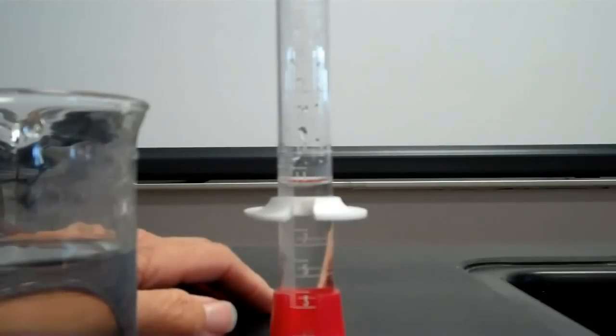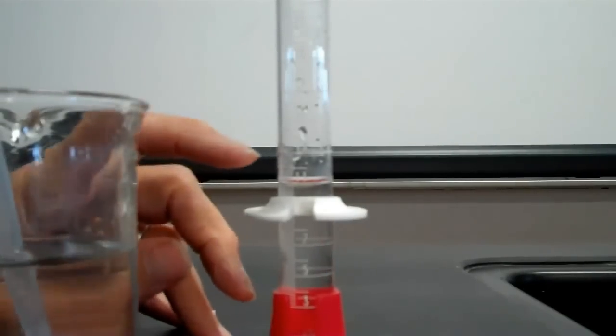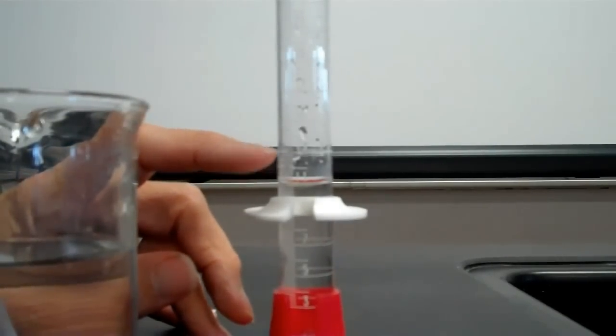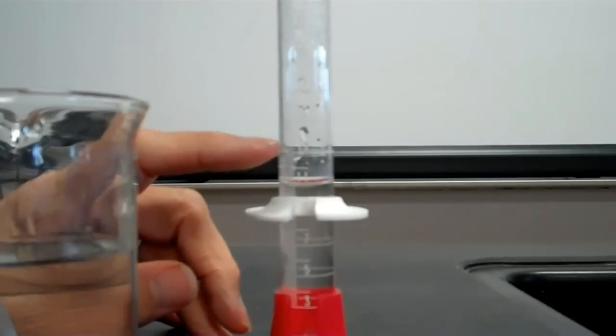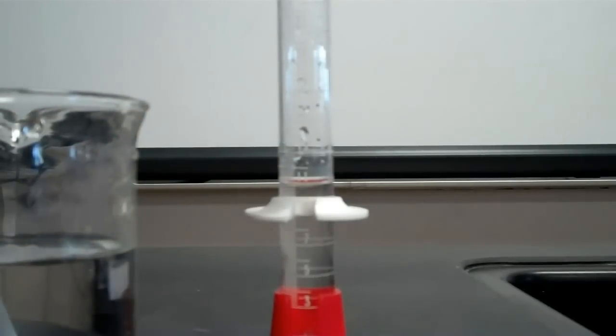And then I'm going to do the exact same thing again. I'm going to count how many drops it takes to get to 12. And then I'm going to count how many drops it takes to get to 13. And then once I've done that, I'm going to find an average.